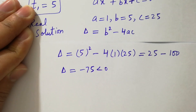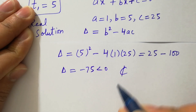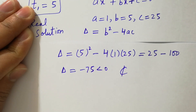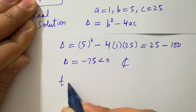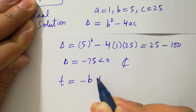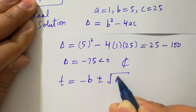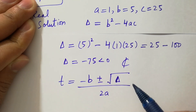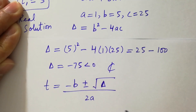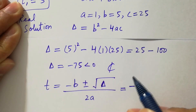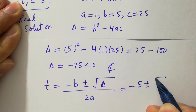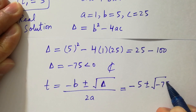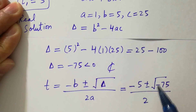The discriminant is negative, so it means it will give us complex solutions. Applying the quadratic formula, t equals minus b plus or minus square root of the discriminant over 2a. Putting in the values, with b equal to 5, we have minus 5 plus or minus square root of minus 75 over 2.